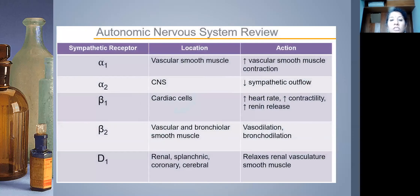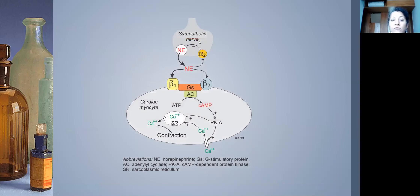Moving on to beta blockers: in the autonomic nervous system we have alpha-1, alpha-2, beta-1, beta-2 receptors, and dopamine receptors. Beta-1 receptors in cardiac cells increase heart rate and contractility; beta-2 receptors in vascular and bronchiolar smooth muscle cause vasodilation and bronchodilation. Sympathomimetic agents like norepinephrine bind both beta-1 and beta-2, activating G-proteins that convert ATP to cAMP, which activates protein kinase, increasing intracellular calcium and cardiac contractility.